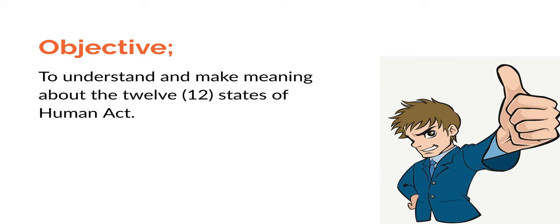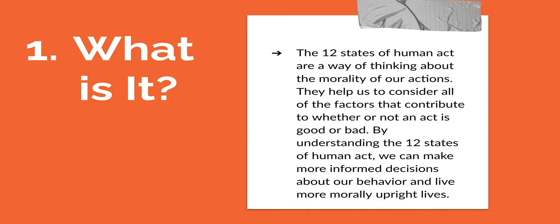The 12 states of human acts are the states you actually go through when making a decision or achieving a goal or objective. This is philosophically proven, and it's interesting how we will all be able to go through them and realize which ones we experience. The 12 states of human acts are a way of thinking about the morality of our actions — they help us consider all the factors that contribute to whether or not an act is good or bad. By understanding them, we can make more informed decisions and live more morally upright lives.